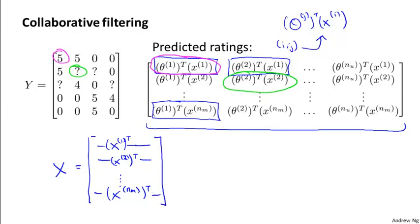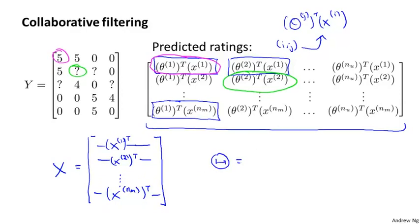And if we also define a matrix, capital theta, and what I'm going to do is take each of the per user parameter vectors and stack them in rows like so. So that's theta 1, which is the parameter vector for the first user, and here's theta 2. And so I'm going to stack them in rows like this to define a matrix capital theta.